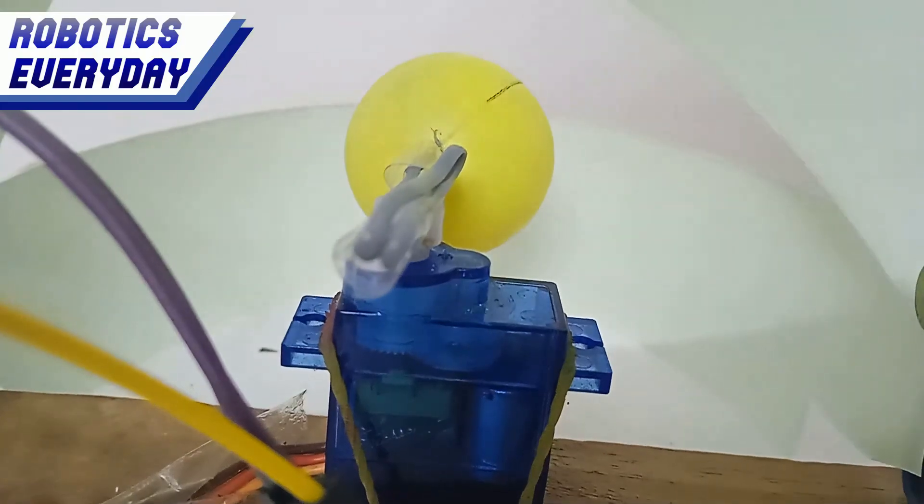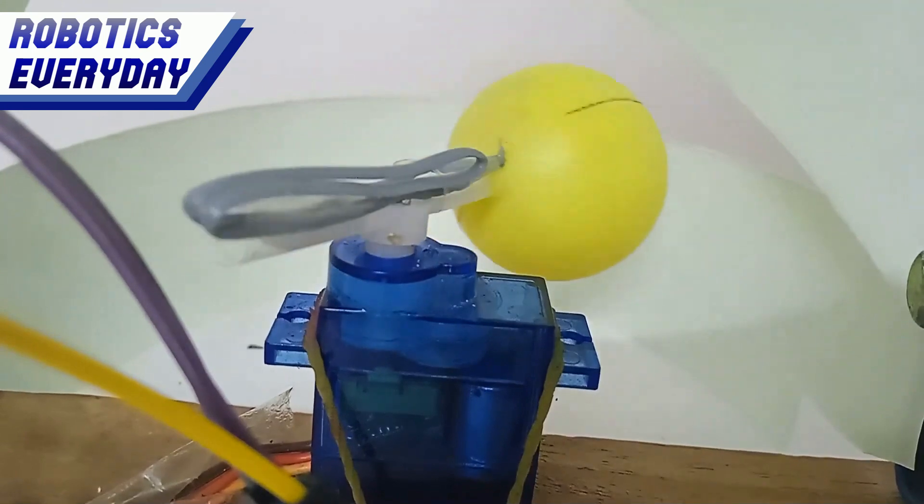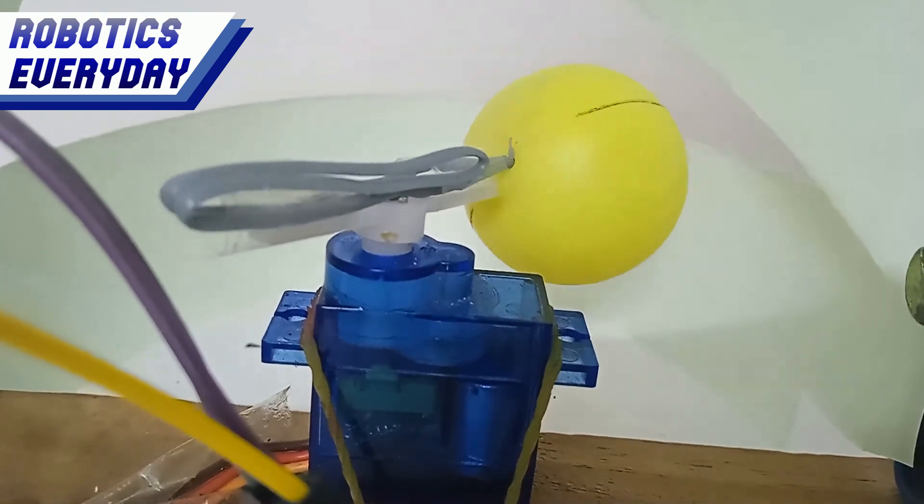This view offers a glimpse of how the robotic eye perceives its surroundings. This viewpoint provides a unique insight into the visual output of the robotic eye, showcasing the images or scenes that it would observe.